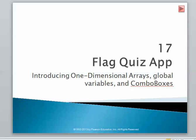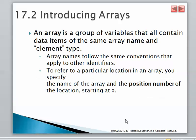Hi, welcome to tutorial number 41 for CSCI 130, Introduction to Programming at the University of Wisconsin Parkside. In this chapter we're going to be working with arrays, global variables, and combo boxes.